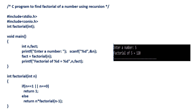This is the code. First of all, we have taken a function prototype: integer factorial of integer. The factorial function will take a number as an integer argument, find the factorial, and return that particular factorial value.